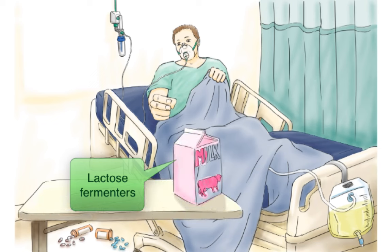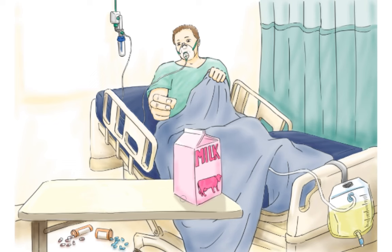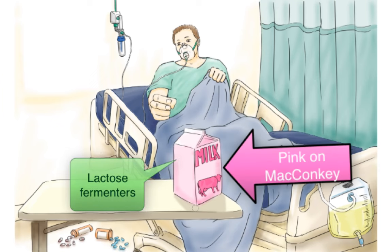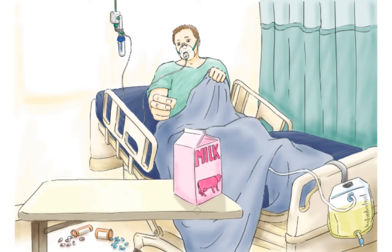Take note that we're drawing the milk carton pink. Lactose fermenters form pink colonies on MacConkey agar, so it's a two-for-one: the milk represents lactose, and the pink color represents the pink colonies on MacConkey agar. You have to remember that these are lactose fermenters. If a question stem tells you an isolate grown on MacConkey agar formed pink colonies, that narrows it down to these three and E. coli, so you have to be able to recognize that.